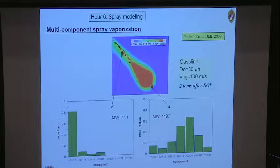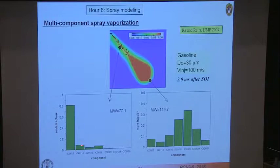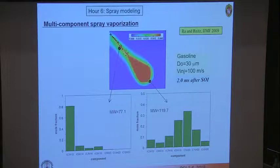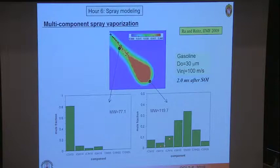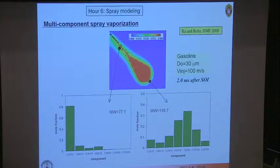As an example, injecting gasoline represented by seven species that match the distillation curve and physical parameters, looking two milliseconds after the start of injection, you see a distribution of species that depends on vaporization history. At the tip of the spray, the distribution looks like the original gasoline (isopentane, isohexane, etc.). Back near the nozzle, only the light ends — smaller carbon number species — remain, because those vaporized first, having the most volatile characteristics.